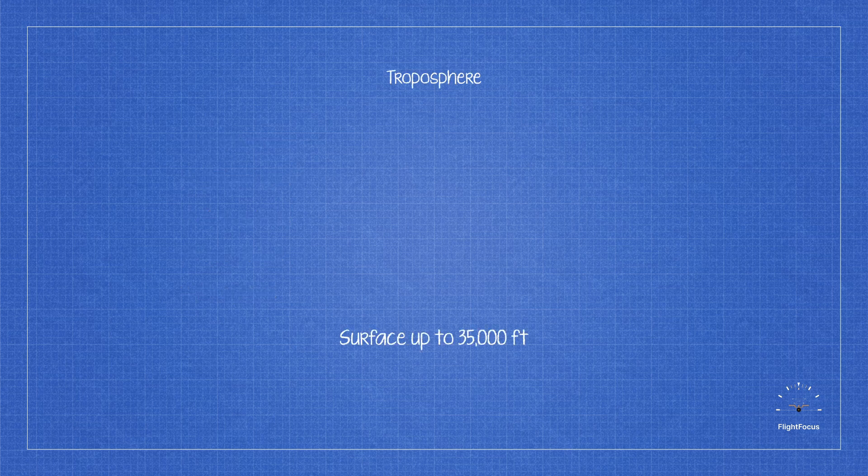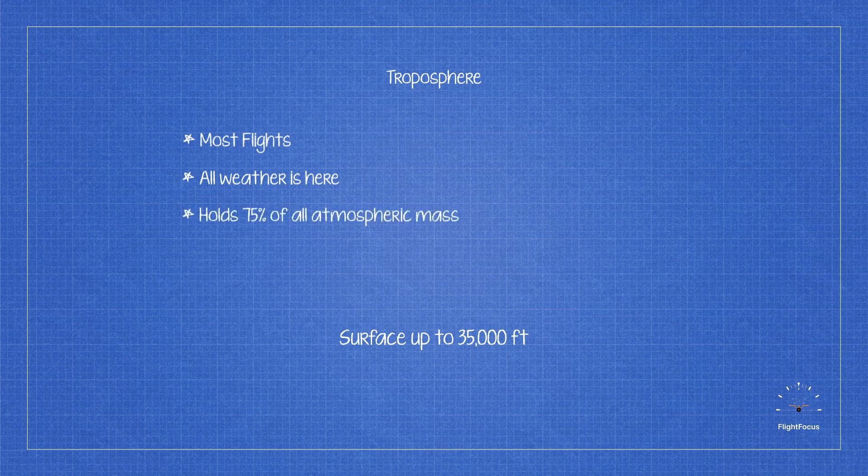Pilots mainly concentrate on the troposphere because that's where most flying happens, and it's also where almost all the water vapor in the atmosphere is found, as this layer makes up 75% of the total atmospheric mass.